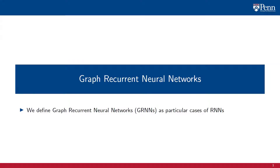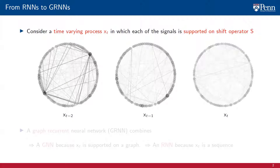We have introduced RNNs as architectures to learn features of time-varying processes. We define now graph-recurrent neural networks as particular cases in which the signals at each point in time are supported on the graph. Consider a time-varying process Xt in which each of the signals observed at each point in time is supported on a common graph S. In the figure, we show three instances of graph signals observed at times t-2, t-1, and t. The figures are variation diagrams where the edges represent changes in signal values. The graph that supports the signals is the same at all times.